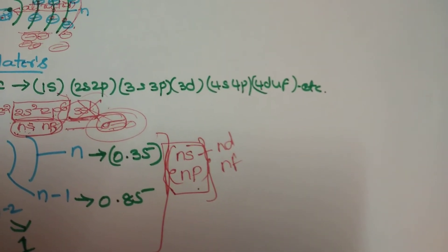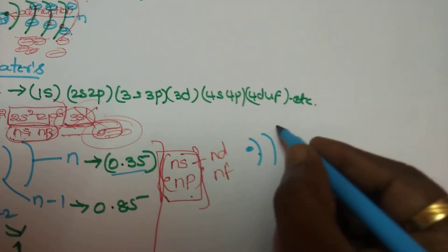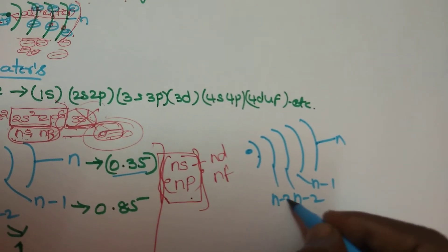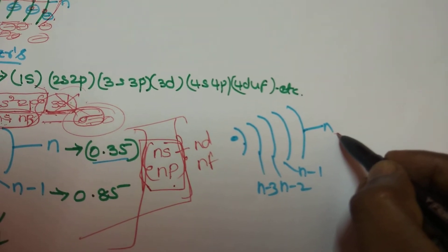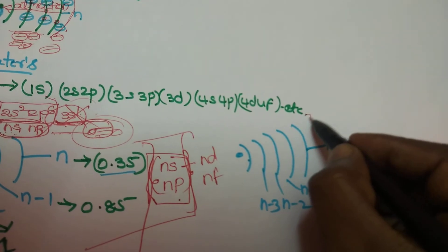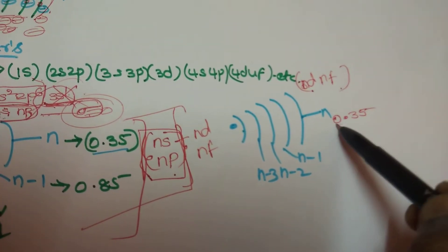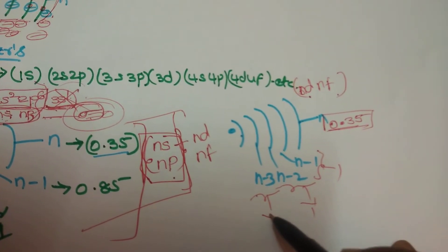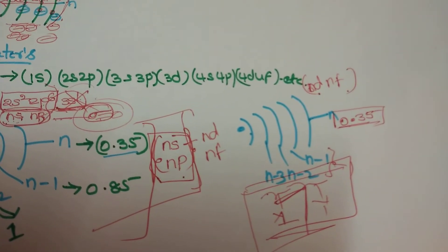For nd and nf subshells, the same-shell contribution is also 0.35. For example, an element containing 3d, 4d, or 4f subshells: the electron in the nd or nf shell experiences 0.35 from same-shell electrons, and all inner electrons contribute a value of 1.0.